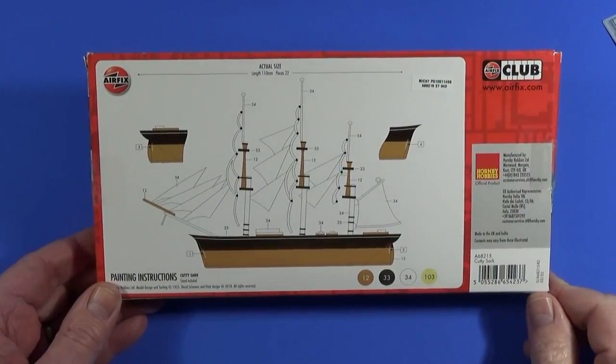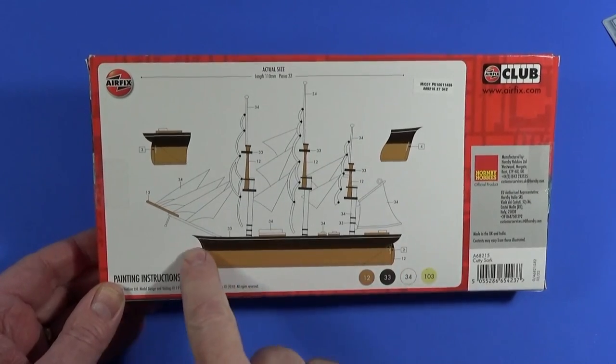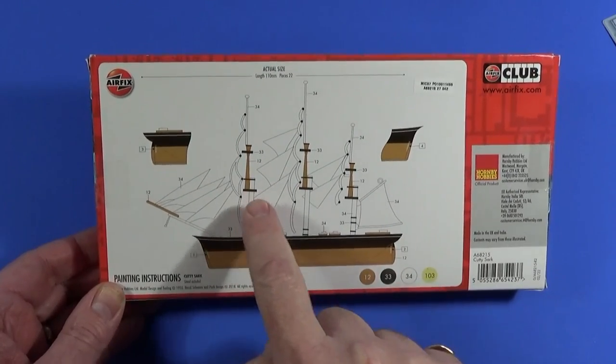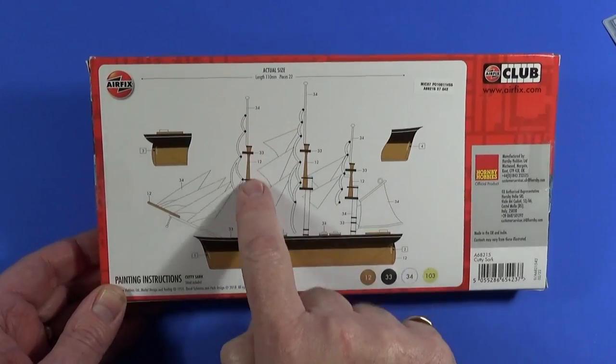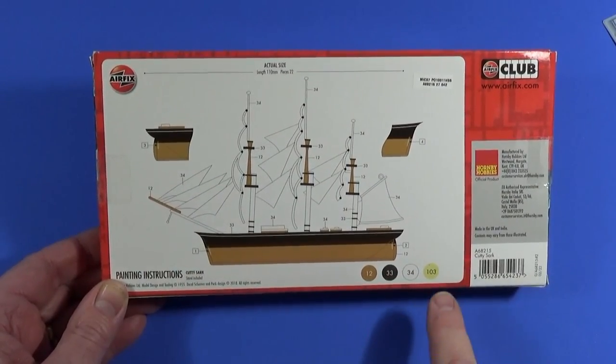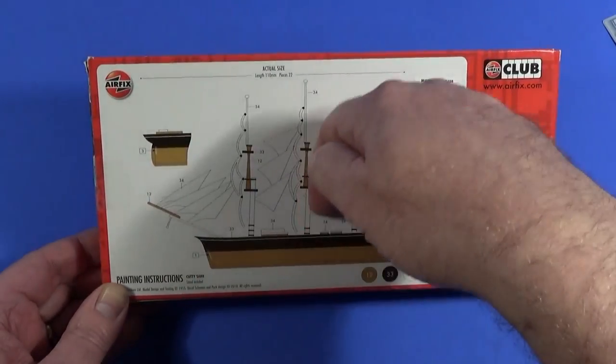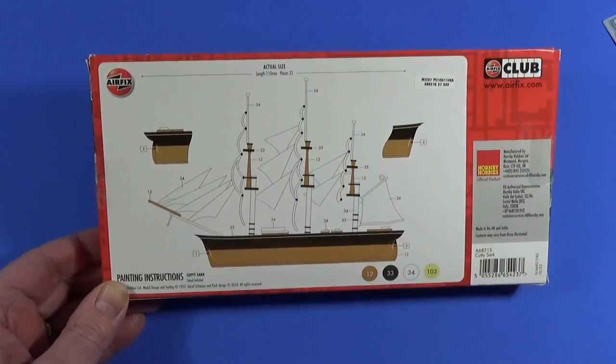On the back of the box is the painting guide you can see here. Brown paint under the water. Black paint above the water. White masts and brown mid masts. The bowsprit is in brown as well. You notice there is a 103 mark here and there's nothing on there. It's because it's the deck that is marked in the instructions however.